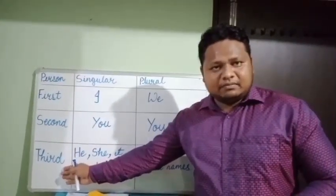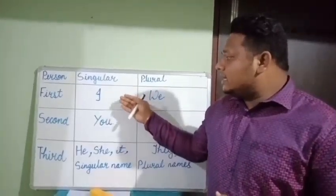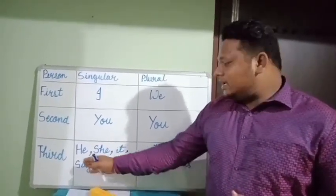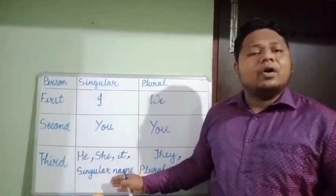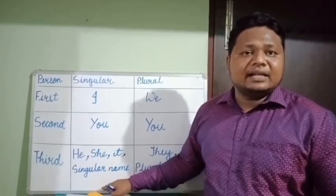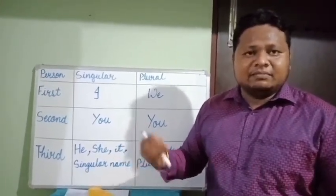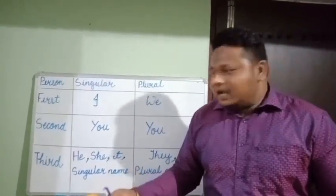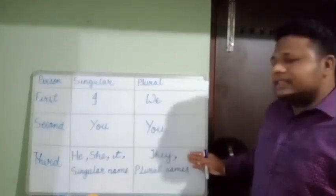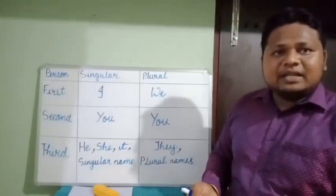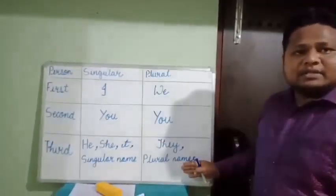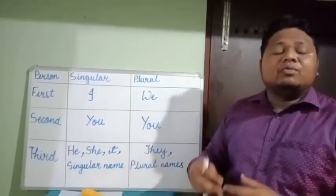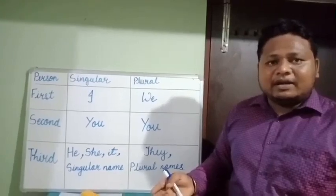The third person refers to the one about whom the first person and second person are talking. The third person singular can be he, she, it, or any singular name such as Ram, Siam, Gita, or the name of any object, material, or place — but it must be singular. The plural form of the third person is 'they,' used when talking about more than one person, place, material, or animal at a time, or plural names like Ram and Siam.